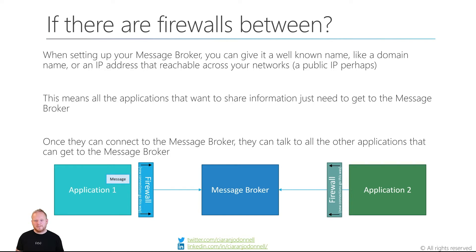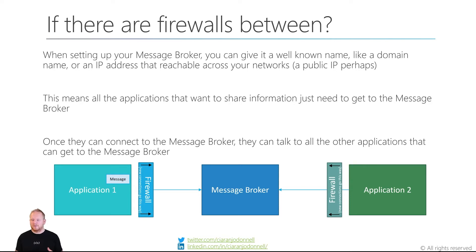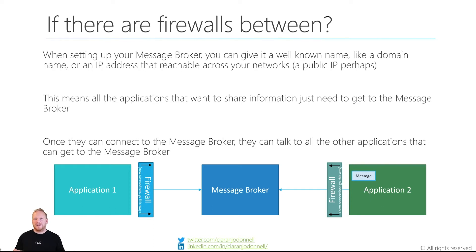The other challenge we had about firewalls being in between — message brokers can help us solve this too. We can put our message broker somewhere where it's accessible by both applications — maybe on the internet, give it a domain name or an IP address, even a public one. That means all the applications that want to share information can connect out of their networks, which is typically allowed through firewalls, out to the message broker and open up those TCP or network channels. Once an application wants to share information, it can connect to the broker and share it with any application that's also connected. We can see the arrow for application two is connected the other way — they're both getting out into the broker, and the message is still able to flow through those two network connections.